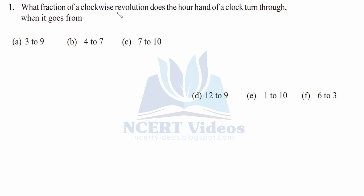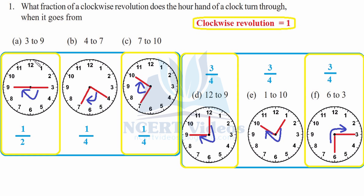Question 1: What fraction of a clockwise revolution does the hour hand of a clock turn through when it goes from 3 to 9? Here you can see that it goes half of the revolution, that is 180 degrees, therefore its answer is 1 by 2.